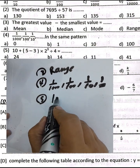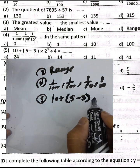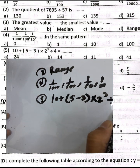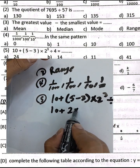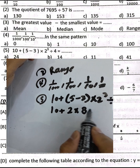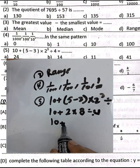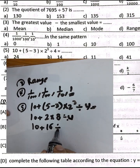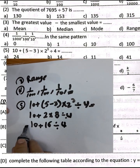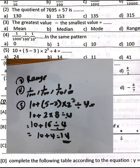Question 5: 10 plus the difference between 5 and 3, times 2 cubed, divided by 4. 5 minus 3 equals 2, times 2³ equals 8, divided by 4 equals 2, then 2 times 8 equals 16 divided by 4 equals 4. So 10 plus 4 equals 14.